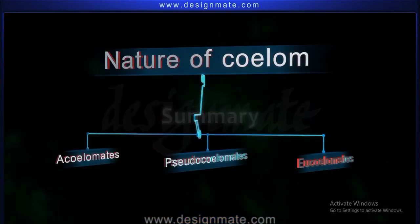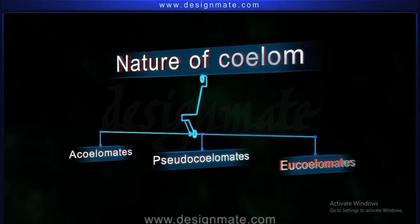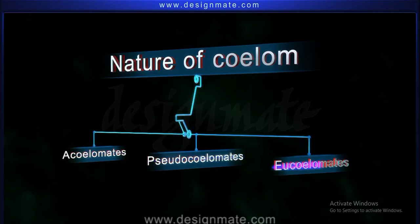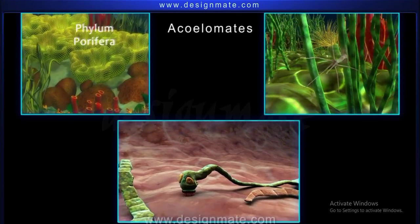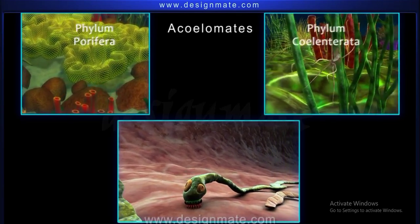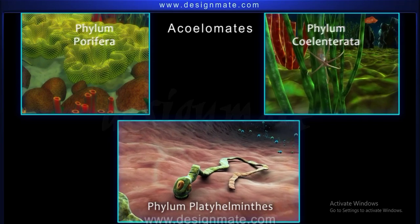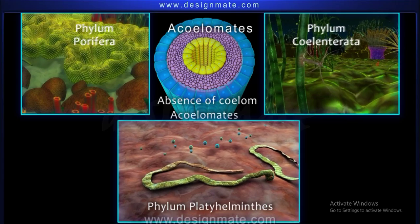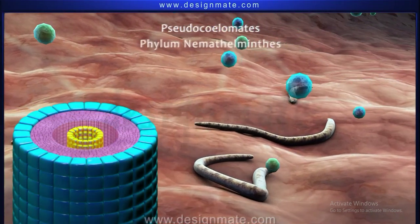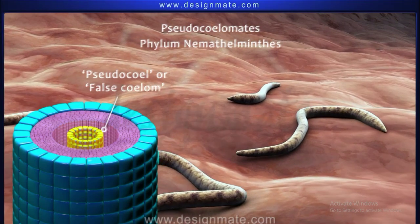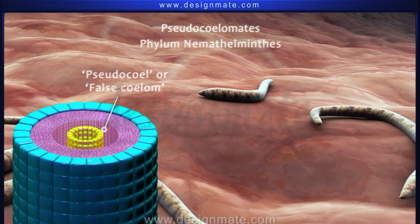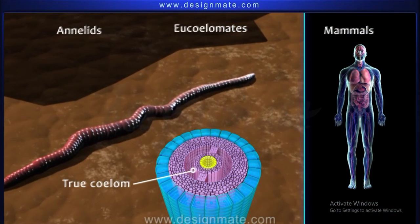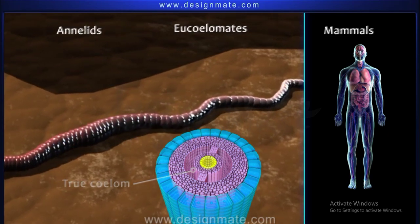Summary. Animals are categorized on the basis of the nature of coelom as Acoelomates, Pseudocoelomates, and Eucoelomates. Animals belonging to Phylum Porifera, Phylum Coelenterata, and Phylum Platyhelminthes have absence of coelom and are called Acoelomates. Members of Phylum Nematoda possess a Pseudocoelom or False Coelom and are thus called Pseudocoelomates. Annelids to mammals possess a True Coelom and are called Eucoelomates.